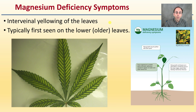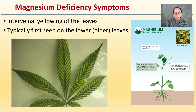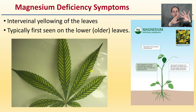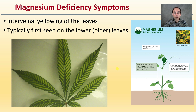What are the deficiency symptoms? Interveinal yellowing of the leaves, typically first seen in the lower or older leaves on the plant. Of course, this is an extreme case, but interveinal — meaning if you're looking at the veins of the plant, it's going to be in between those veins. Interveinal is what that's referring to. Typically it's first seen on those lower or older portion leaves first.